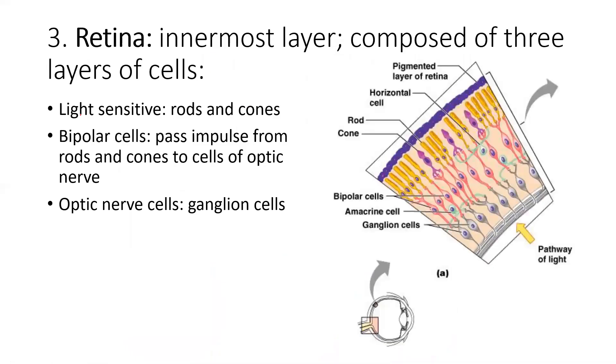Retina, innermost, light sensors of rods and cones. It's also made up of this middle layer called bipolar and the optic nerve. So it's pigmented. Horizontal cells, rods and cones. Here are the rods and cones. Now, here's the really weird part about this. Evolution kind of got this backwards.